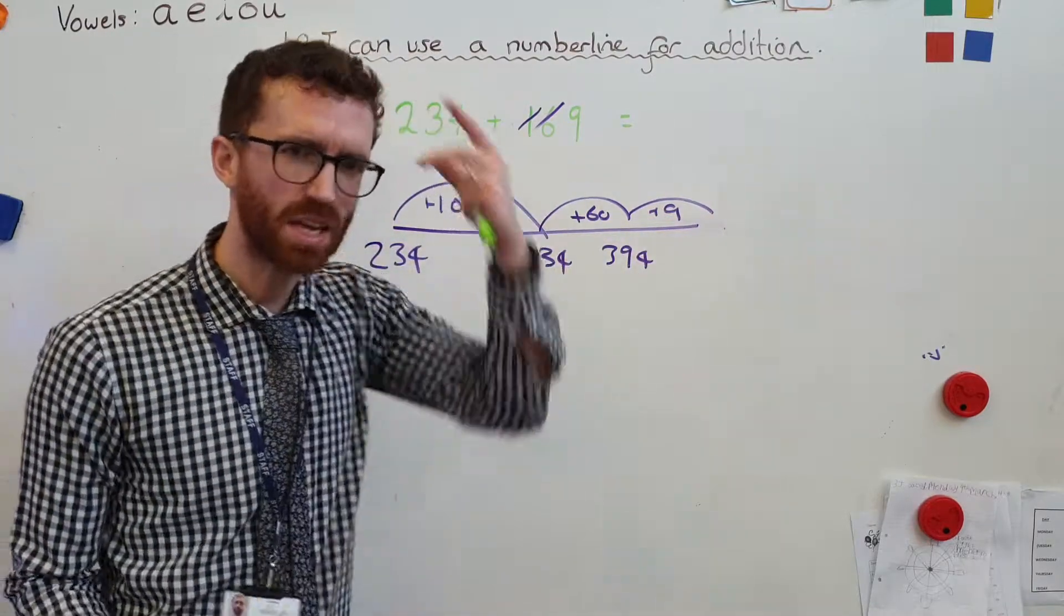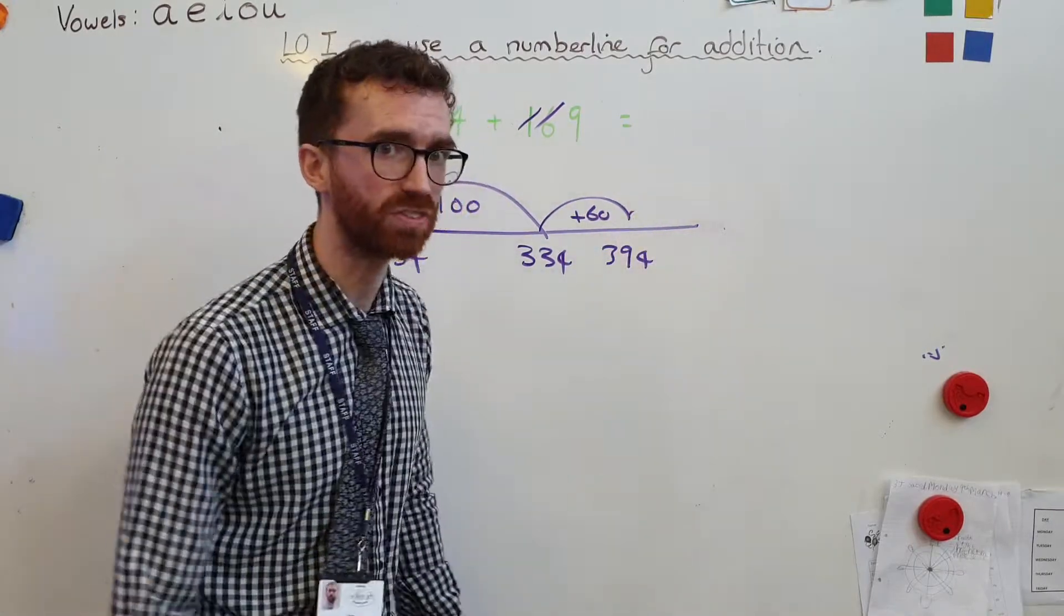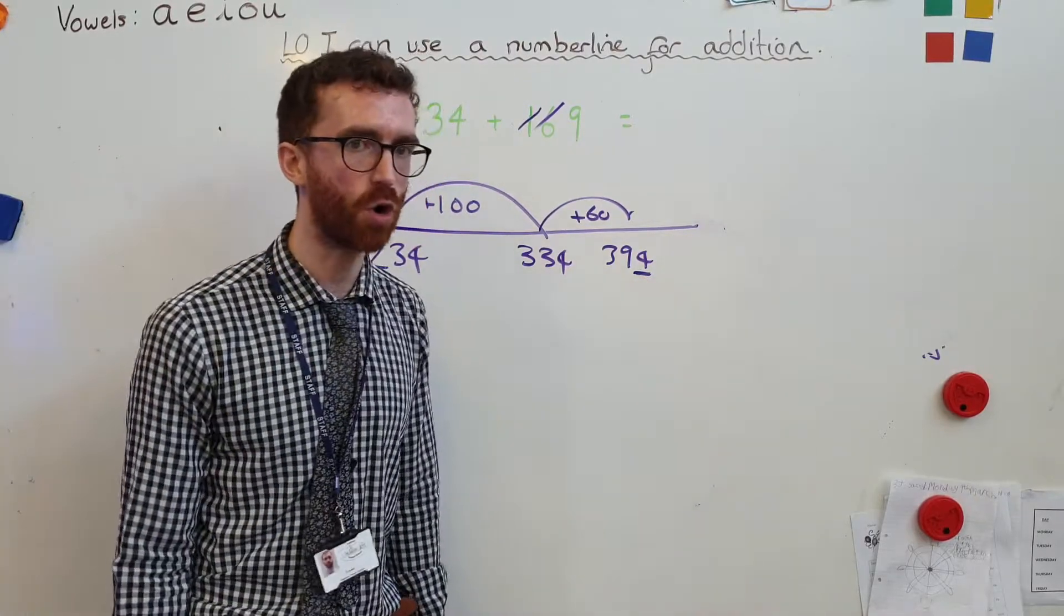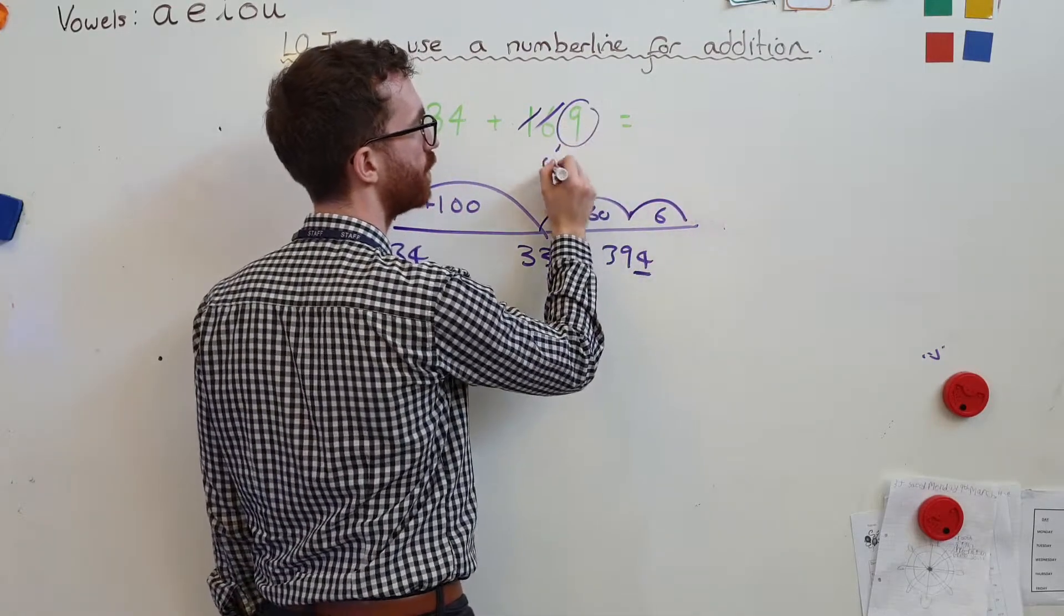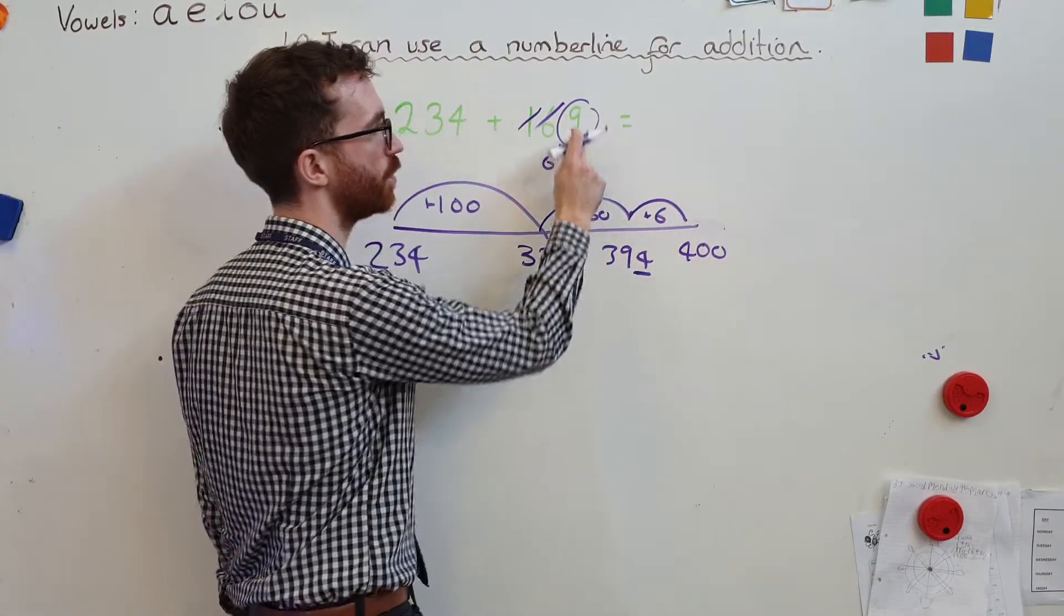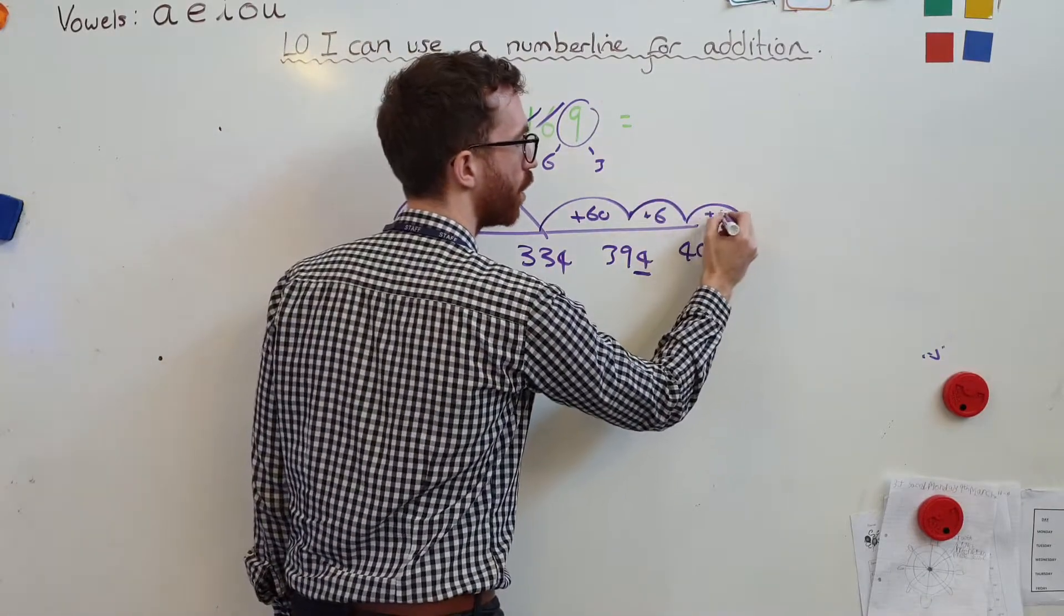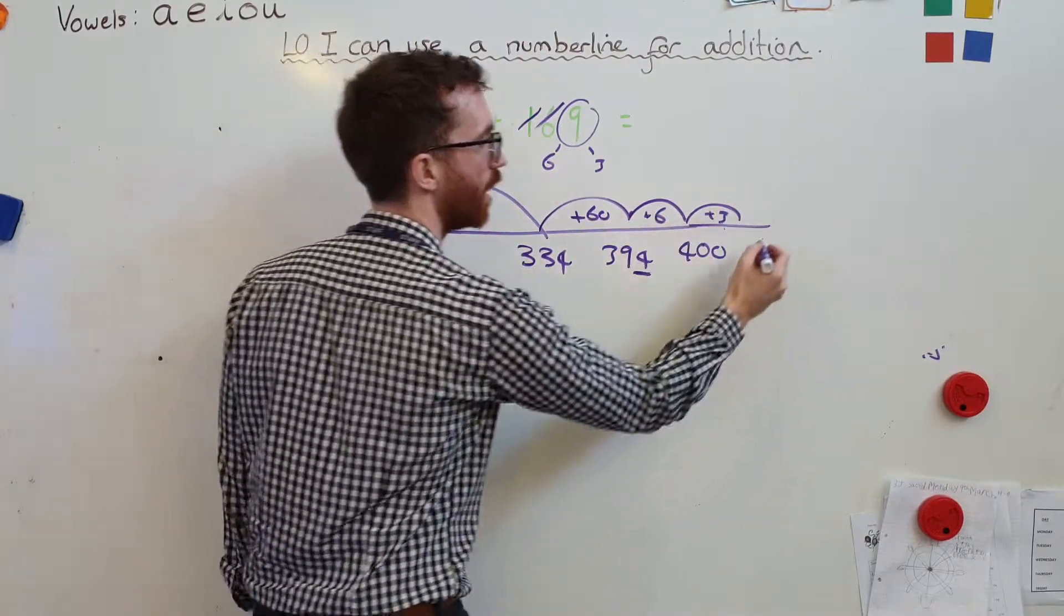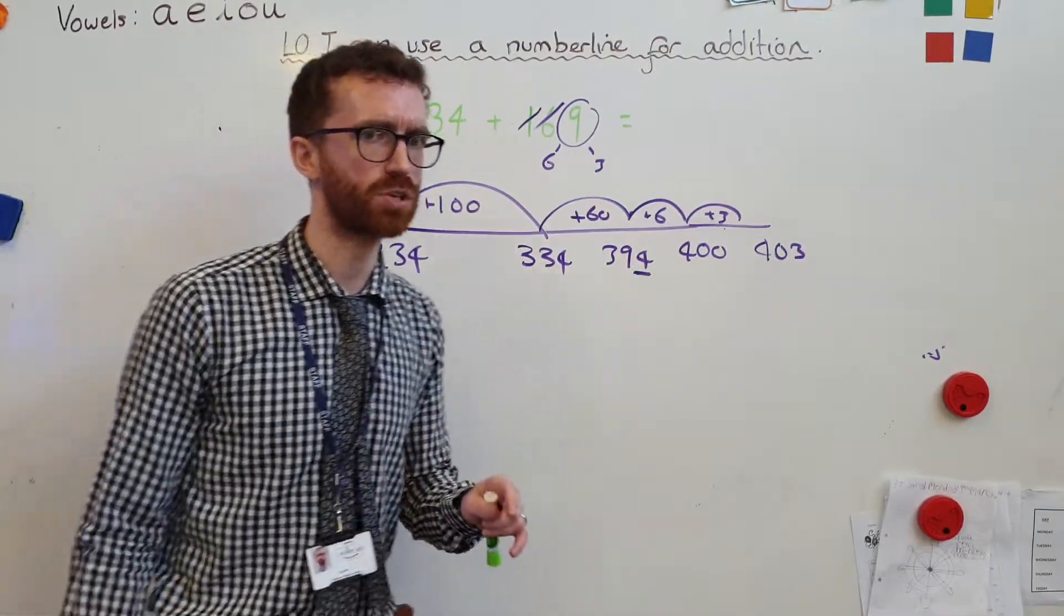Uh-oh. 4 add 9 blows my mind, it's tricky. I find that hard. Do you know what I'm going to do? I'm going to use my number bonds to help me. I'm hoping that all of you are screaming at home, number bonds. So I think about my number bond. What's my number bond for 4? Well, my number bond for 4 is 6. So if I add 6, that gets me to 400. And what have I got left? Well, 9 is 6 and 3. We found that out from earlier. So I've got 3 more to add. So now I've added 169, gets me to 403. Number bonds is another one that we need to make sure we're happy with, okay?